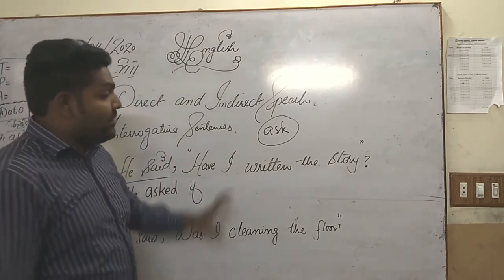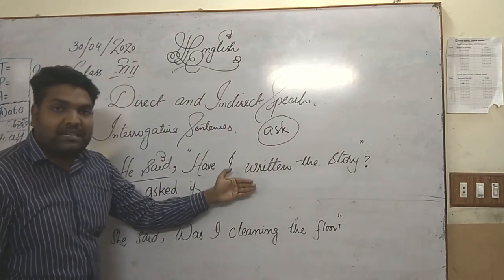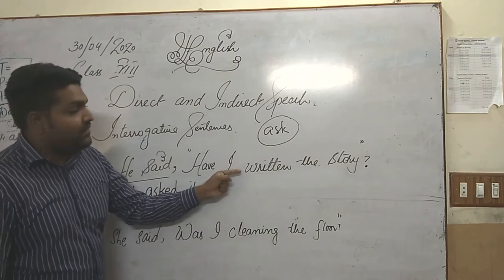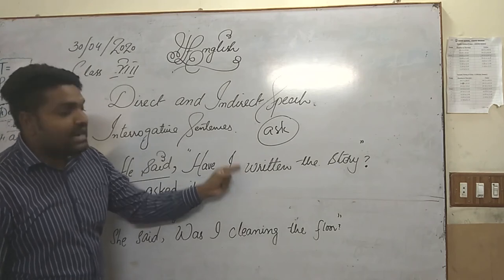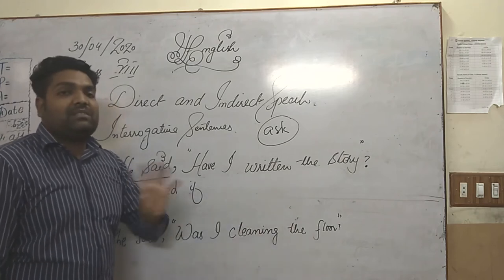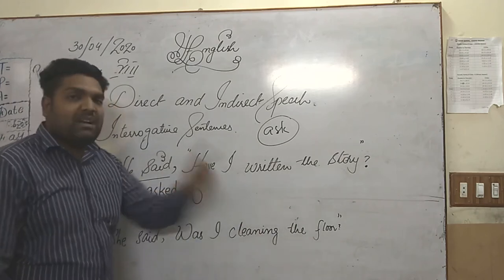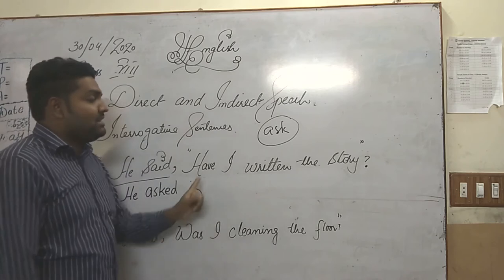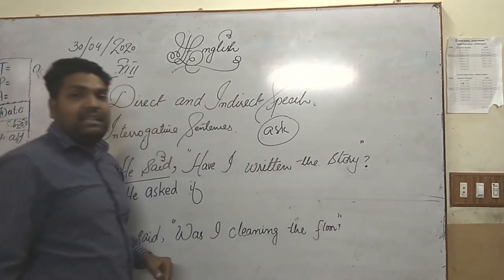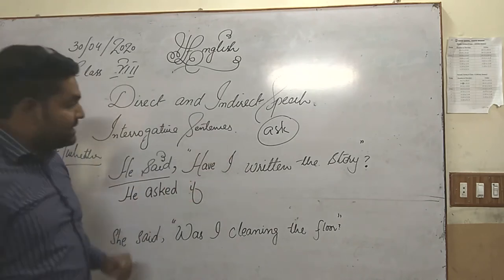This is the most important part of direct and indirect speech. When you are changing from direct to indirect speech, the remaining statement must not be written in the interrogative structure. It must be in the positive form, and there must be no question mark at the end. You have to remove the question mark in indirect speech.